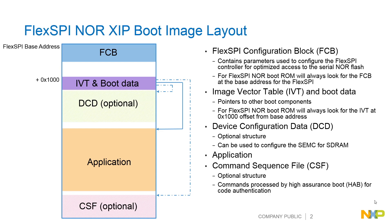This diagram here shows the layout for a FlexSPI NOR XIP boot image. Starting with the FCB here — this is your FlexSPI configuration block. This data structure is used to provide parameters to the ROM that the ROM will then use to configure the FlexSPI controller in the optimal configuration for accessing the FlexSPI flash. It will always be located as the very first address within the FlexSPI region of the processor.